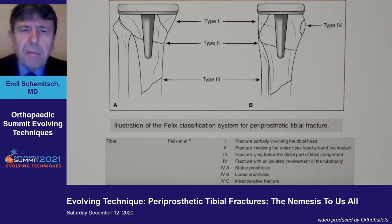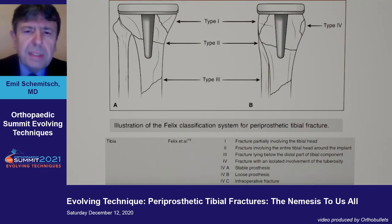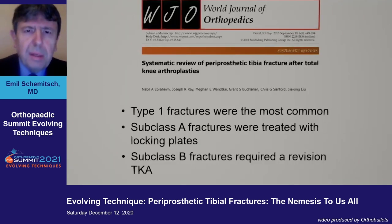The Felix classification is most commonly used and it's useful. Type 1 fractures involve the base plate, type 2 the keel, type 3 are distal to the implant, and type 4 involve the tuberosity. They're further subdivided into A and B — the A fractures being a stable implant, and the B fractures being an unstable implant.